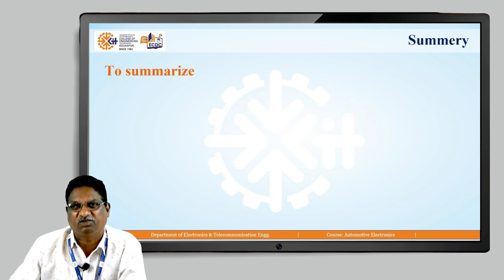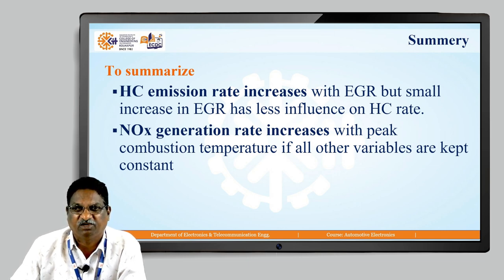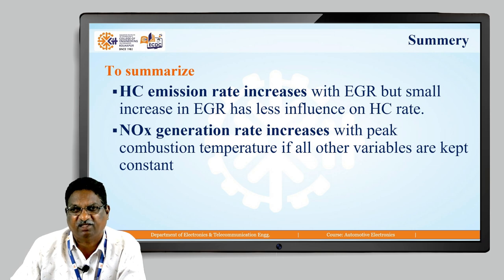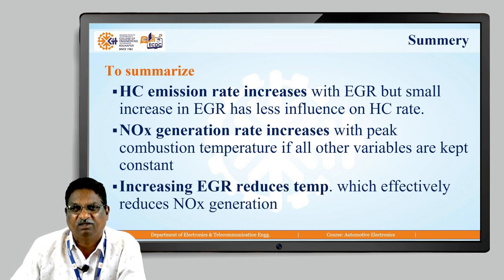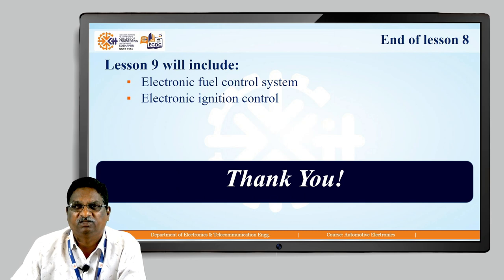Summary of today's lecture: HC emission rate increases with EGR, but a small increase in EGR has less influence on HC rate. NOx generation rate increases with peak combustion temperature when all other variables are kept constant. Increasing EGR reduces temperature, which effectively reduces NOx generation. This is the end of lesson number 8. In lesson number 9, you will study the electronic fuel control system and electronic ignition control.